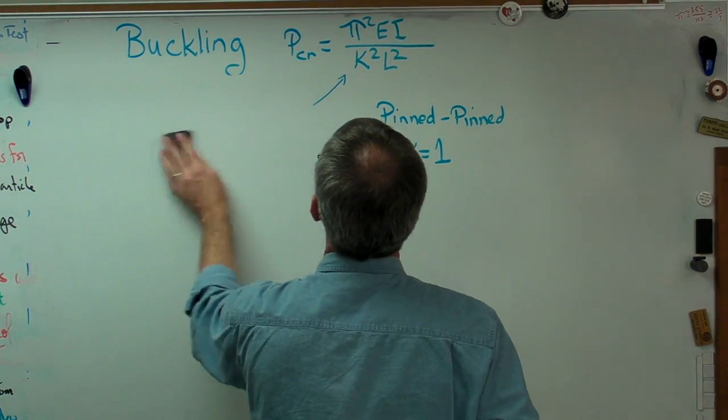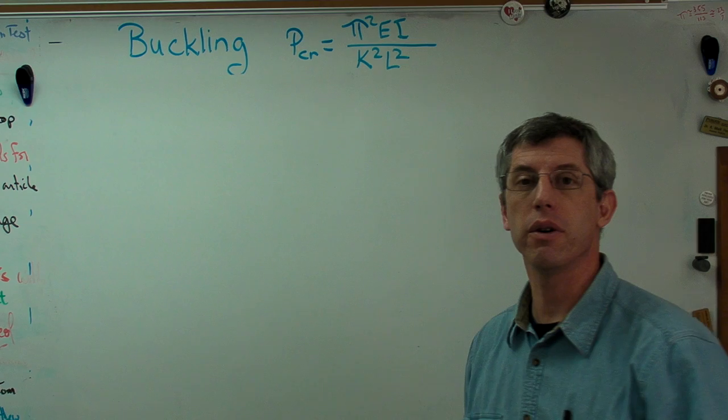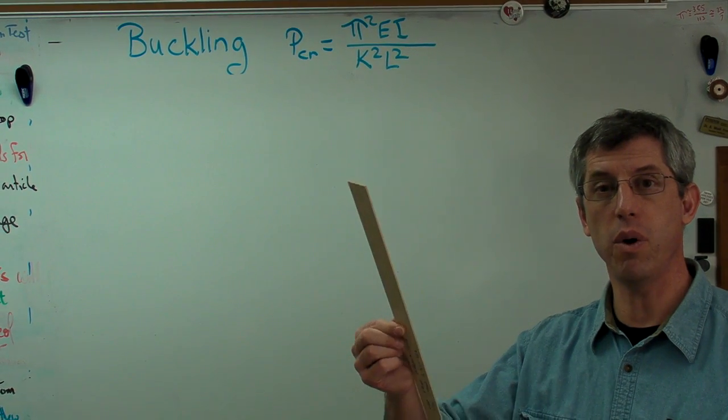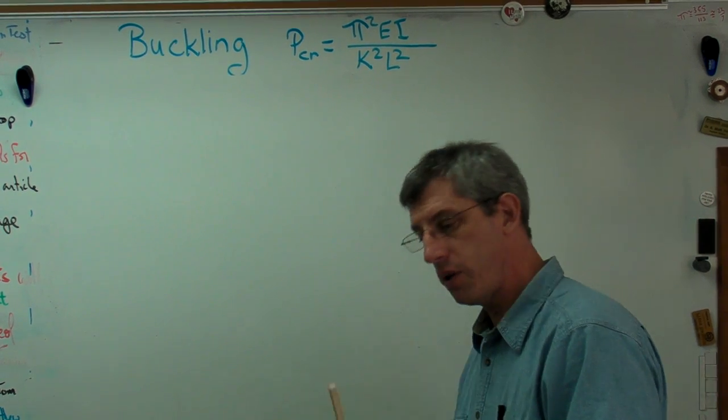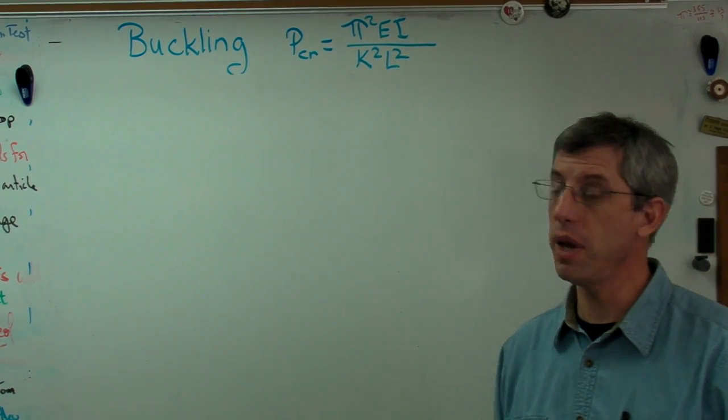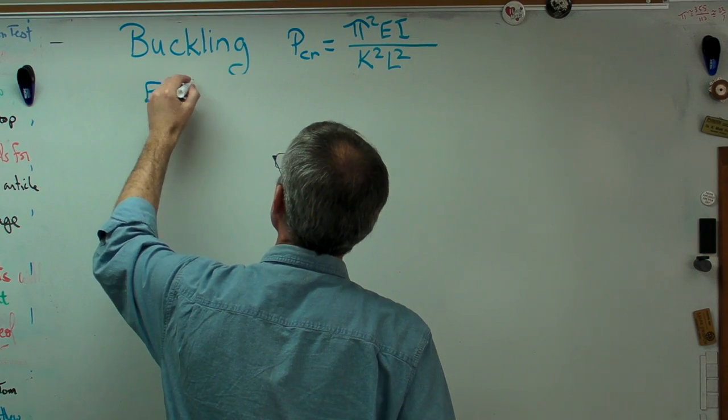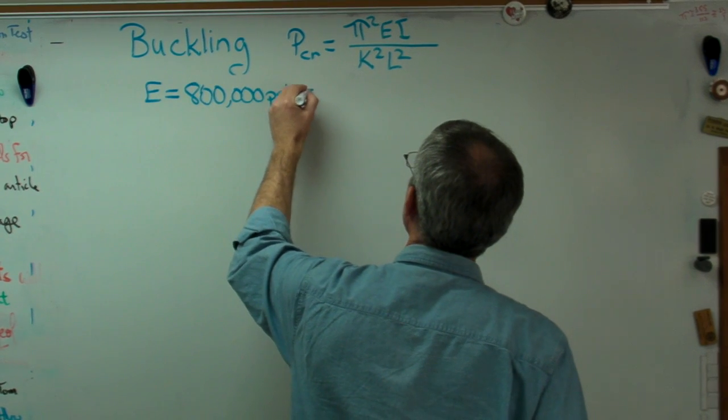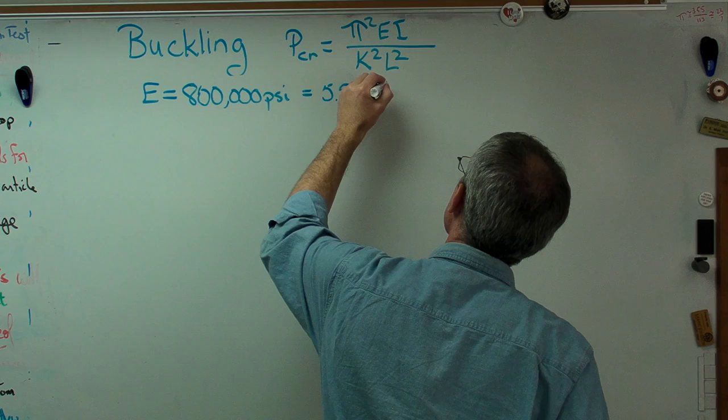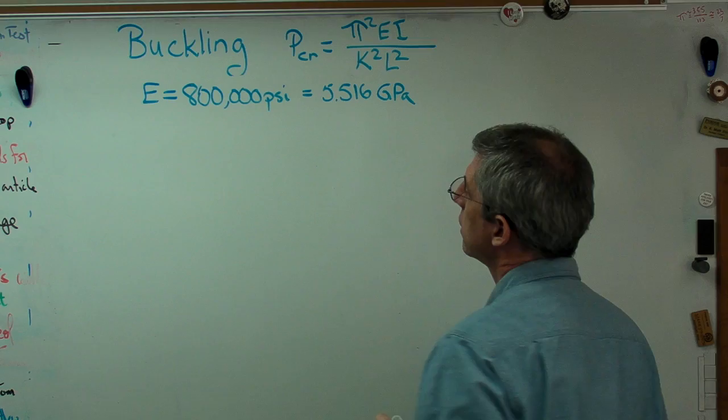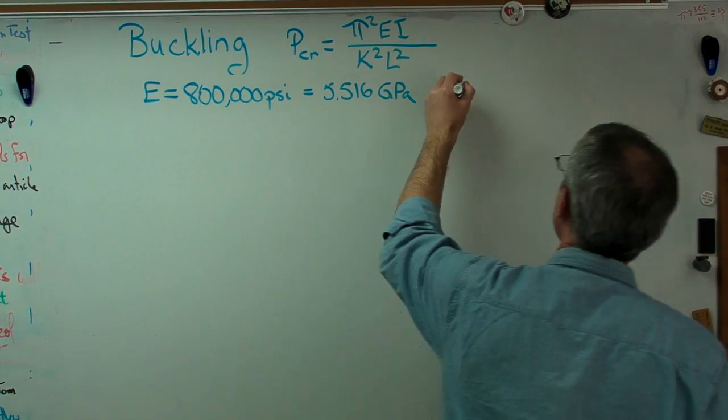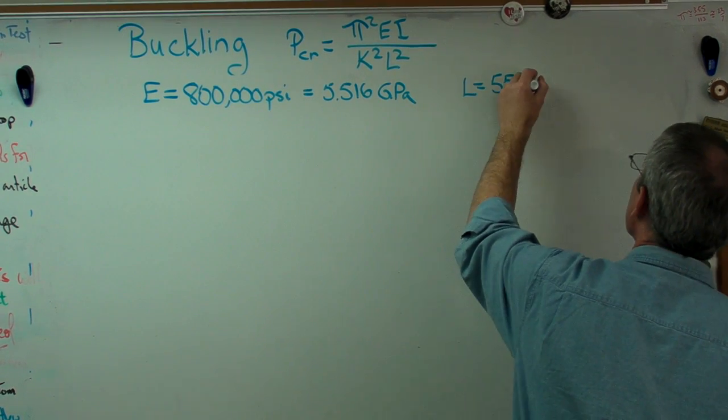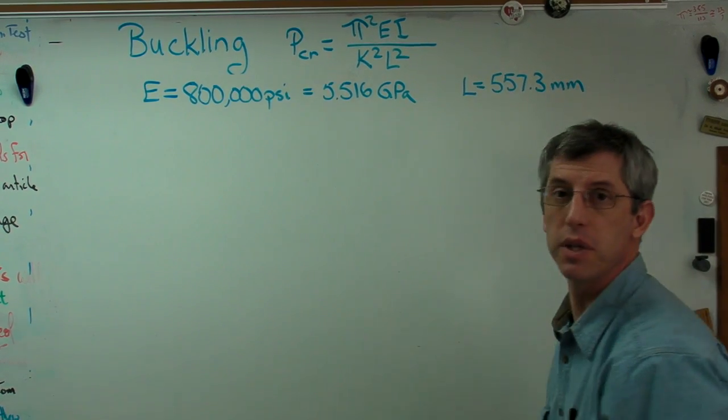Let's put some numbers to this for our two conditions here, and I'll show you how we calculate this. The idea here is to see the effect of area moment of inertia on the calculated buckling load. All right. This is going to be stick one, this wide, thin one, this one that's shaped like a ruler. Stick number two is going to be the one that's square in cross-section. Like I said, they came from the same board. I assumed E in English units to be 800,000 psi. It doesn't really matter in this case since we're making a comparison, but that's about right. And this is about 5.516 gigapascals. We'll do everything in metric units here. Length for both beams was just a tick under 22 inches, and so that works out to 557.3 millimeters.